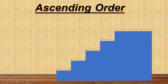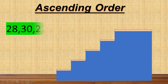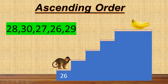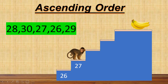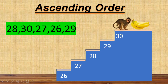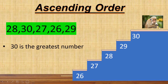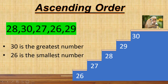Now let's arrange another group of numbers in ascending order. Mr. Bingo wants again to get his banana by arranging these numbers in ascending order. Among these given numbers, which number is the smallest? Yes, it is number 26. The next number will be 27. Next is 28, followed by 29. And lastly, 30. Among these numbers, 30 is the greatest number and 26 is the smallest number.